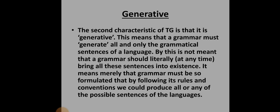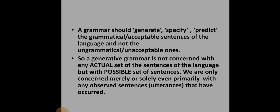The second characteristic of transformational grammar is that it is generative. This means that a grammar must generate all and only the grammatical sentences of a language. By this is not meant that a grammar should literally at any time bring all these sentences into existence. It means merely that grammar must be so formulated that by following its rules and conventions we could produce all or any of the possible sentences of the language.